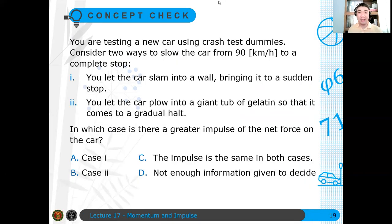So let's have some conceptual check. You are testing a new car using car crash test dummies. Consider two ways to slow the car from 90 kph to a complete stop. One, you let the car slam into a wall bringing it to a sudden stop. And two, you let the car blow into a giant tub of gelatin so that it comes to a gradual halt. In which case is there a greater impulse on the net force in the car? Case one? Case two? The impulse is the same or not enough information given to decide? Which do you think is the answer? I'll be giving you maybe 30 seconds to think of it. So maybe 30 seconds have elapsed. What's the answer here? You have the same initial speed. Therefore you expect that it will give you the same impulse. Therefore the answer here should be letter C.